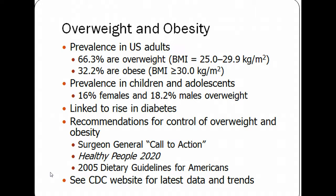These numbers on this slide should not look shocking. We've covered some of this previously in class: about two-thirds of the U.S. are overweight, and one-third are obese — BMI greater than or equal to 30. Obesity has tripled in youth over the last 20 years, going from about 5% or 6% to about 18%.